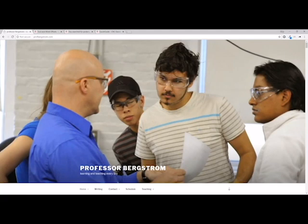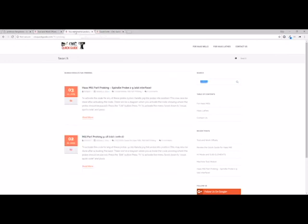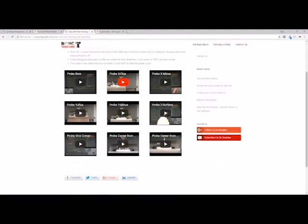One of the easiest ways to set the tool and work offsets in a Haas mill is to use the Haas probing systems. You can learn more about that at the CNC Quick Guide. Actually, there's a couple things you can do here. If you go to the search bar, search for probing, you'll find that there's a couple of blog posts here that bring you to some videos that actually show you each of the probing macros operating. So you can actually see how these macros operate here.